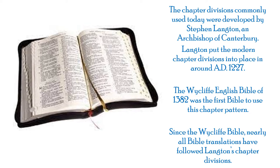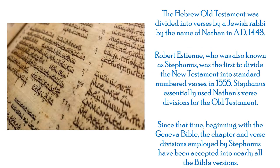The chapter divisions commonly used today were developed by Stephen Langton, an Archbishop of Canterbury. Langton put the modern chapter divisions into place around AD 1227. The Wycliffe English Bible of 1382 was the first Bible to use this chapter pattern, and since then nearly all Bible translations have followed Langton's chapter divisions.